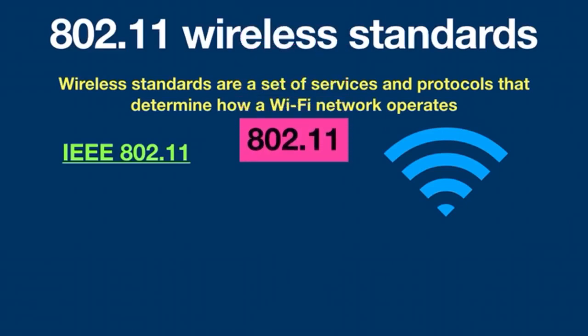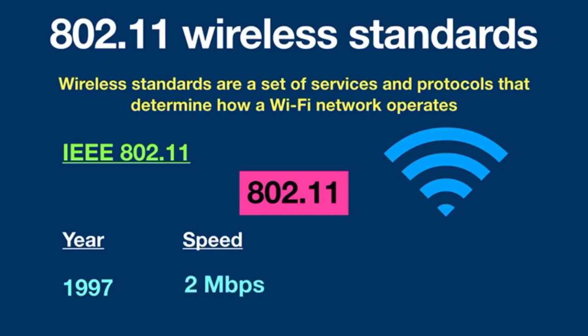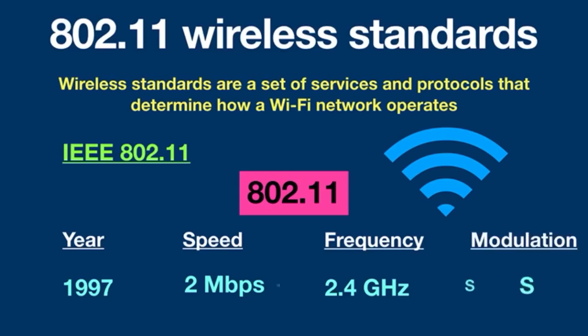802.11 is the base version, created in 1997. It provided a speed up to 2 Mbps and the frequency was the 2.4 GHz band. It used modulation methods of Frequency Hopping Spread Spectrum and Direct Sequence Spread Spectrum.